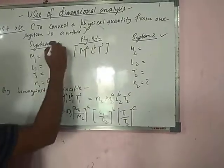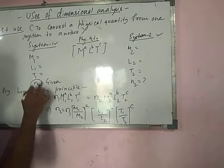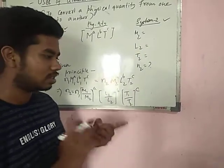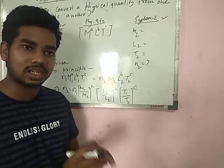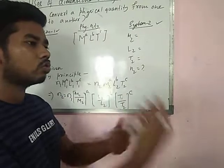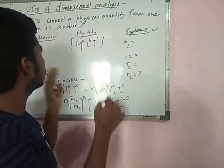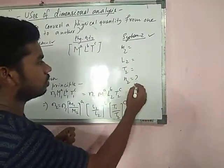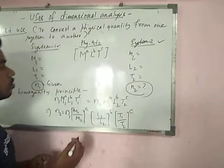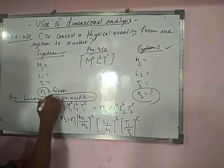Now in system one, let M₁, L₁, T₁ values be given, and N₁ also given. N₁ means the magnitude of the physical quantity. Suppose 20 kg meter per second - this is the magnitude of momentum, where N₁ is 20. And in system two, to which system we have to convert.